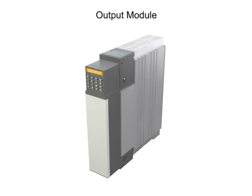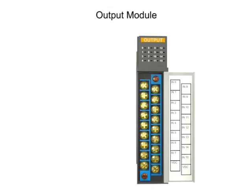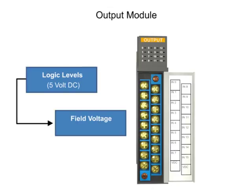Output modules perform the same function but in reverse order, where 5-volt DC is converted to field voltages to control devices such as 120-volt relay coils.